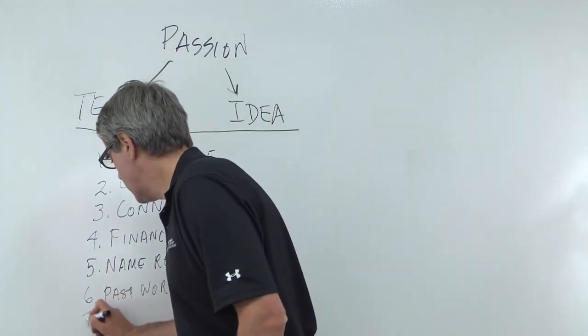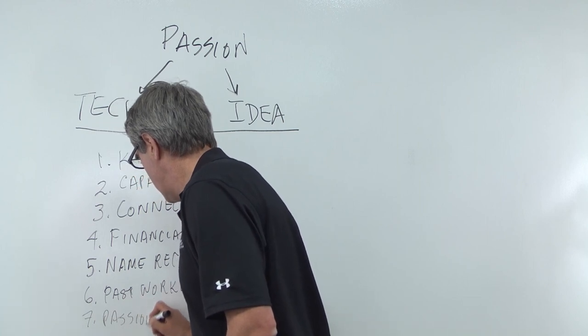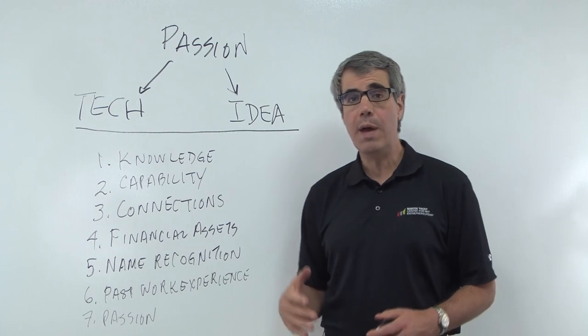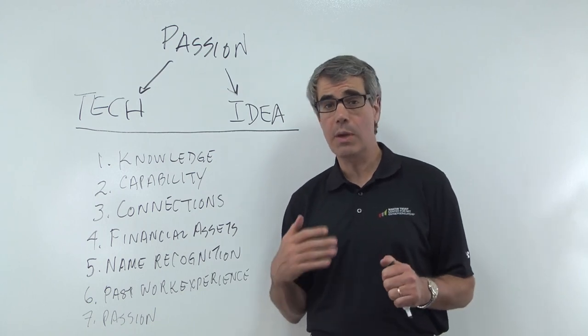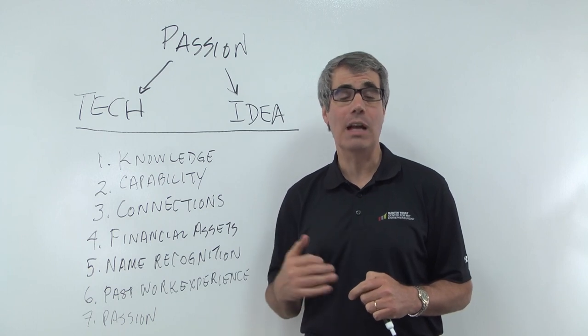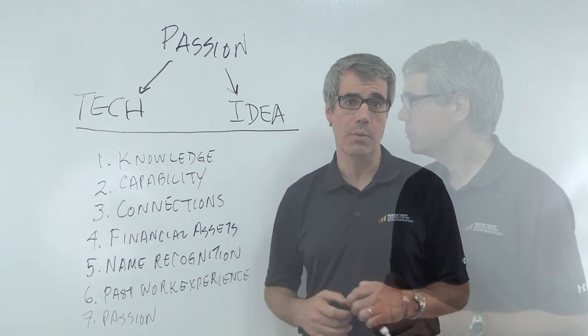Number seven would be passion. What you're going to be doing when you choose it, you better love. Because if you can't see yourself doing this for the next six years, you're very likely not going to be a successful entrepreneur. You have got to have a lot of passion for what you're doing.